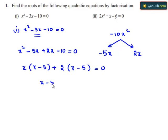Now x minus 5 can be taken as common and we will be getting x plus 2. This is equal to 0.